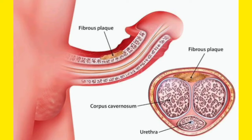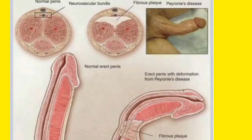Now look at this picture. If we cross-section the penis, we have the corpus cavernosum, we have the urethra, and you can see the fibrous plaque here. This fibrous plaque is the inelastic scar deposited in the tunica albuginea, and it causes bending and curving of the penis — that is Peyronie's disease.